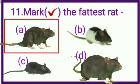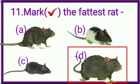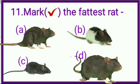And A number rat is fatter than B and C number rats. And D number rat is fattest among all. So student, option D is our correct answer. So we will tick D here.